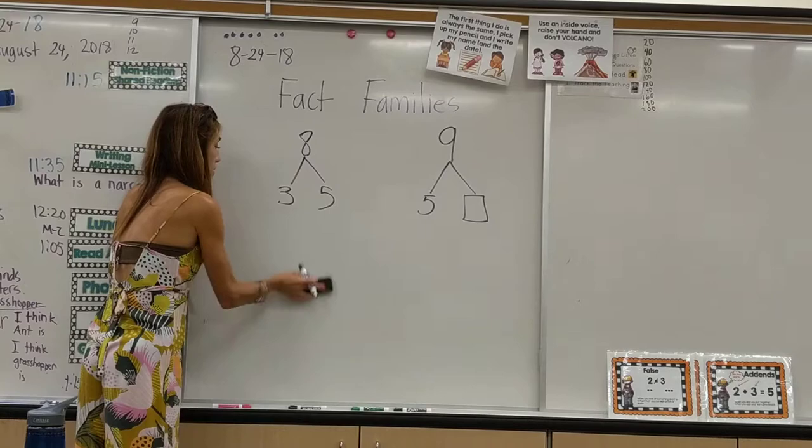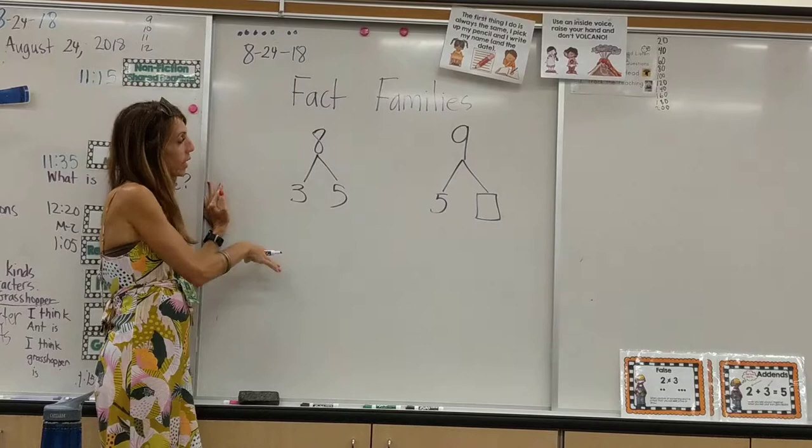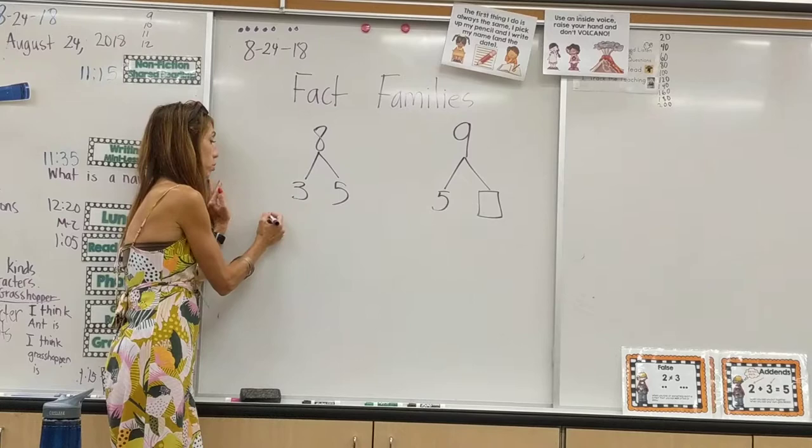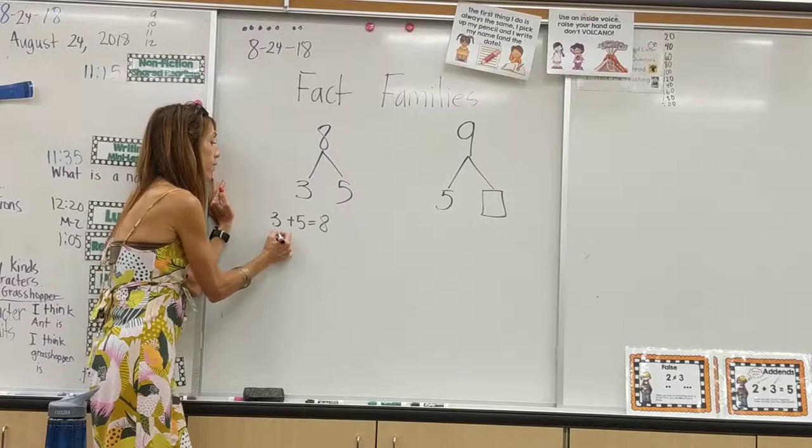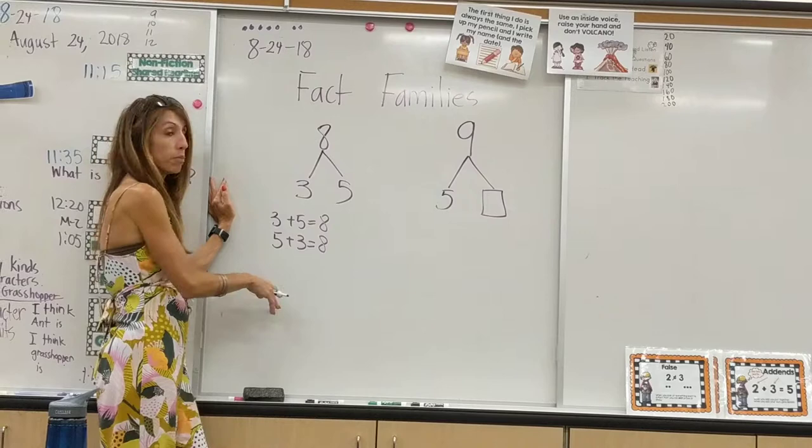For today's purpose, we're just going to look at the number bond that states that three and five make eight. So what we want the kids to realize is there are several equations that go along with the number bond. The first being three and five make up eight, and how that's written is three plus five equals eight. The associative property of addition allows them to also write it five plus three equals eight.